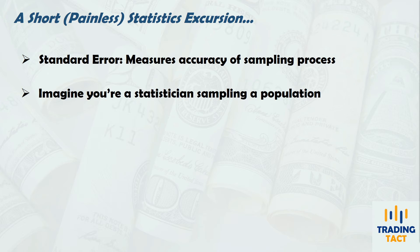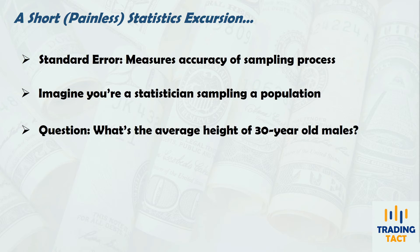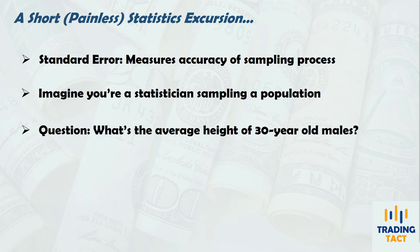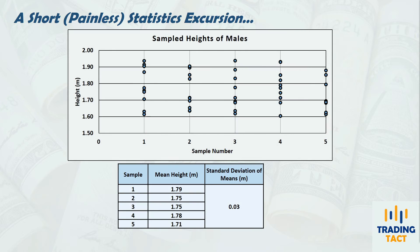Imagine you want to determine the average height of 30-year-old males in a country. The true value is unknown, but you hope to get a good estimate of it through the sampling process. So you go about collecting five samples of data throughout the country, each consisting of 10 data points, and get the following plot. You then find the mean height from each of the five samples, and then compute a standard deviation of these five means. This standard deviation of the means is equal to the standard error.